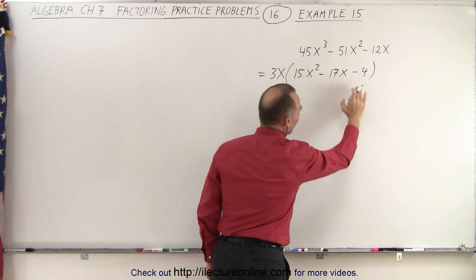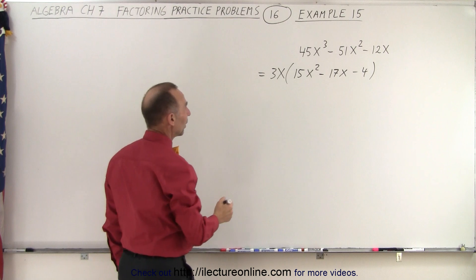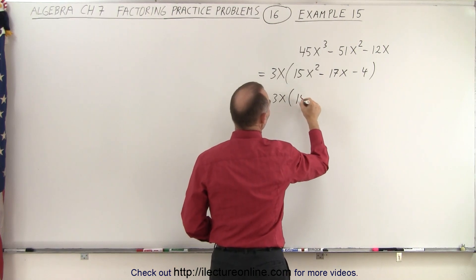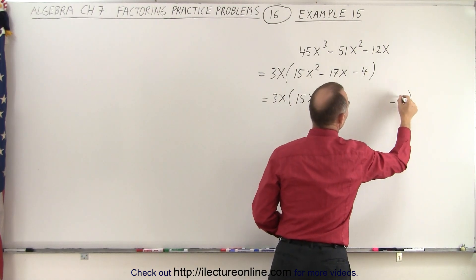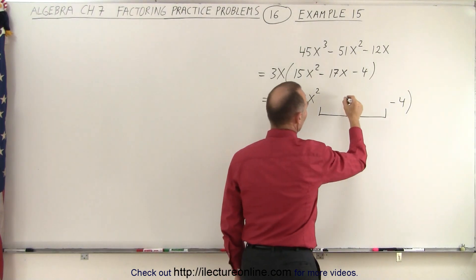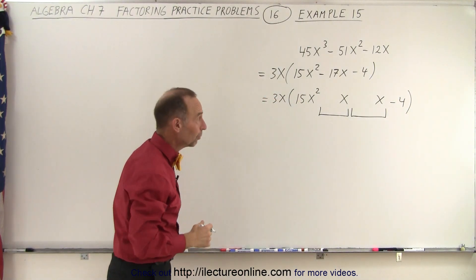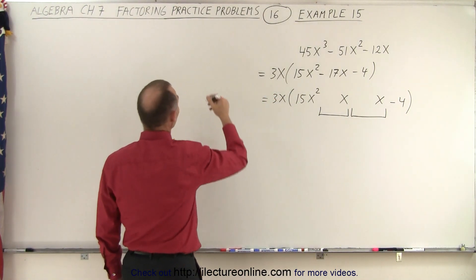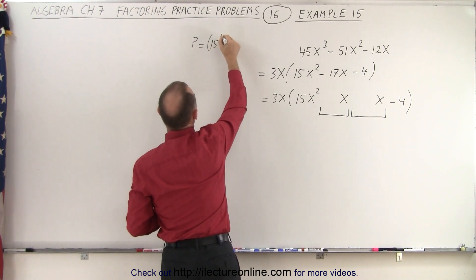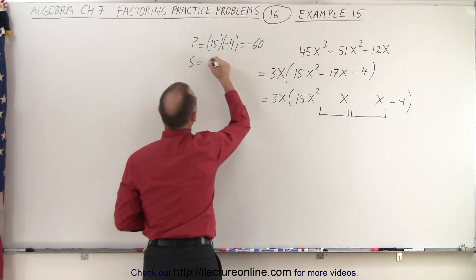Now it comes down to factoring the remaining trinomial. There are a couple ways we could do that. Let's try the first way where we write this as 4 terms instead of 3 terms. So this is equal to 3x times 15x squared and minus 4, and then I need to add two middle terms that will add up to the minus 17x. I need an x here and an x there — we're looking for two numbers such that the product of the two numbers equals 15 times negative 4, which is minus 60, and the sum equals negative 17.